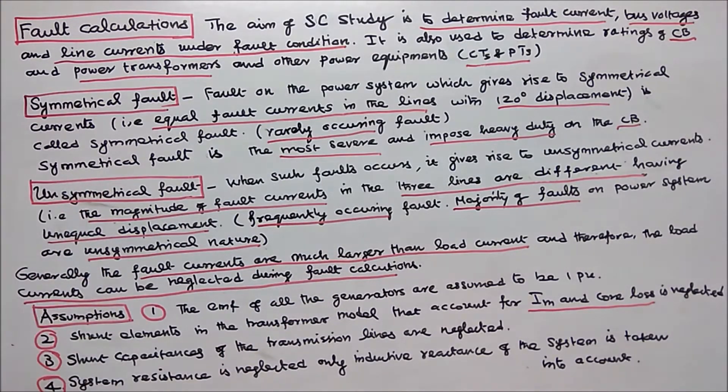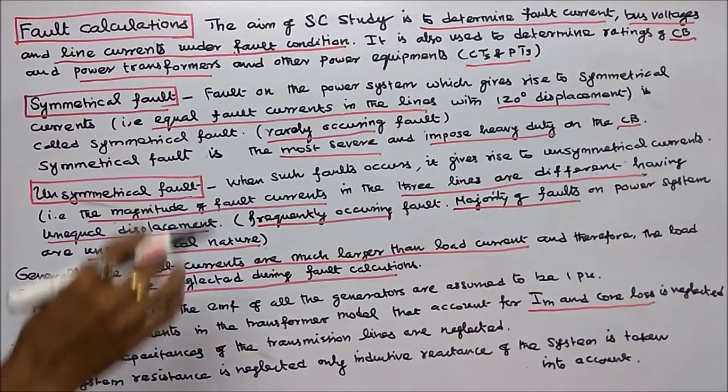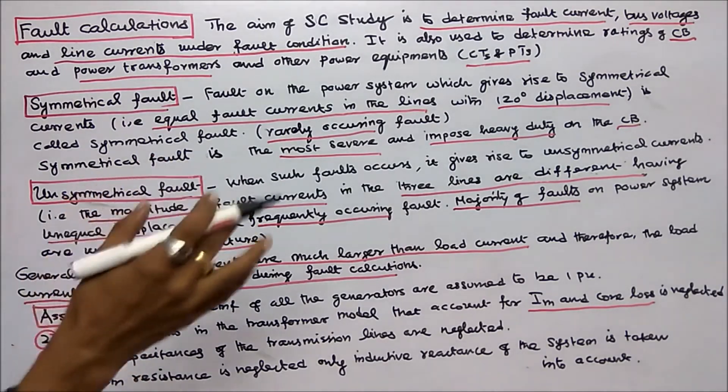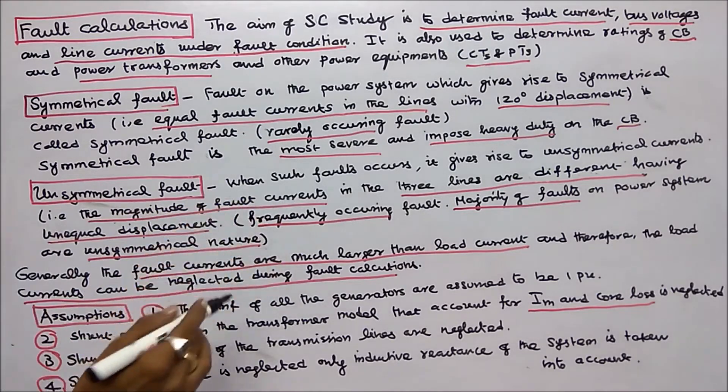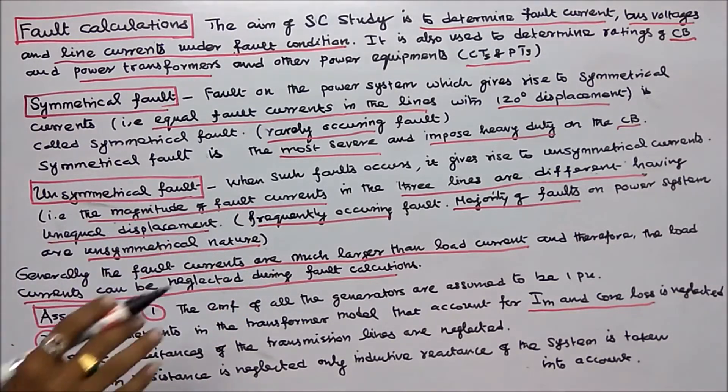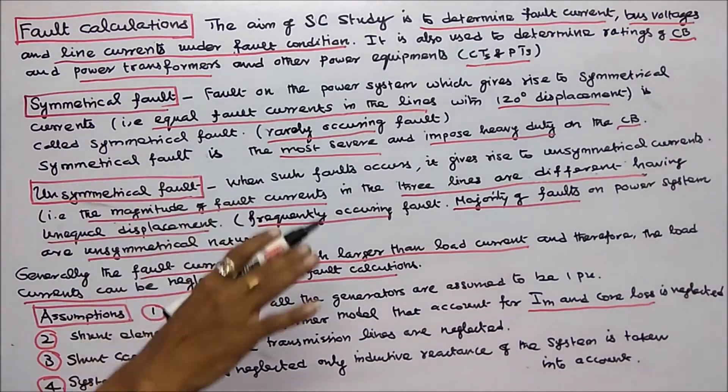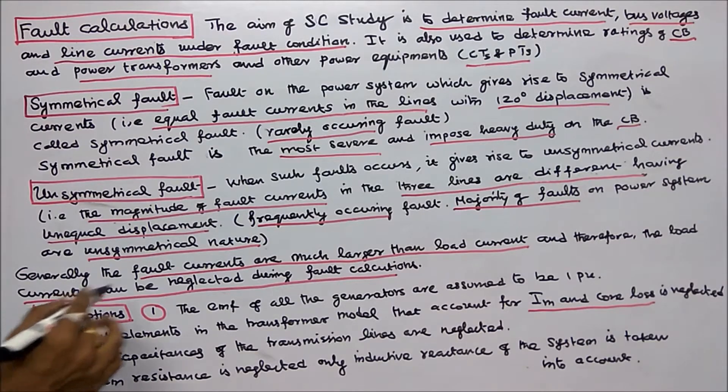Unsymmetrical fault means when such a fault occurs, it gives rise to unsymmetrical currents, that is the magnitude of fault currents in the three lines are different having unequal displacement. Unsymmetrical faults are frequently occurring faults. Majority of faults on power systems are unsymmetrical faults.